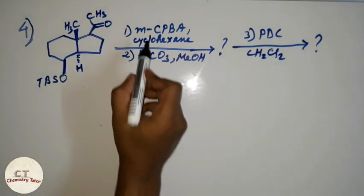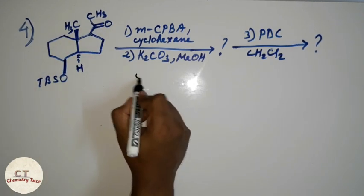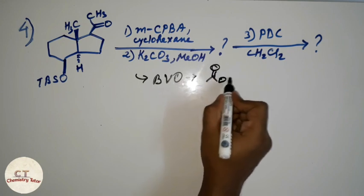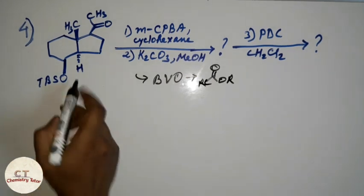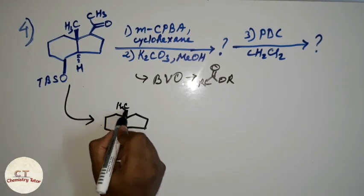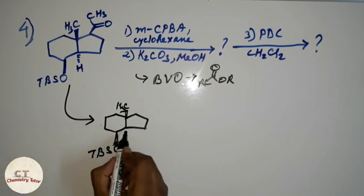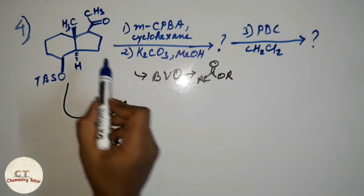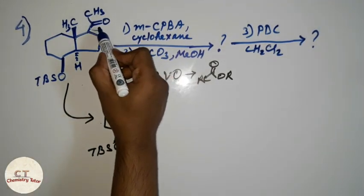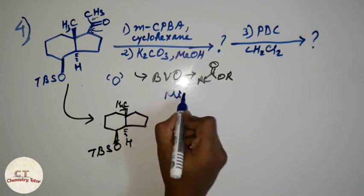In the next question, MCPBA is given but there is no double bond this time, so no epoxide will form. Instead, there is a ketone group, so Baeyer-Villiger oxidation will take place, giving an ester group. There is an OTBS (tert-butyldimethylsilyl ether) protecting group which will not interfere. An oxygen will be inserted, and where it inserts depends on the migratory aptitude of the group.